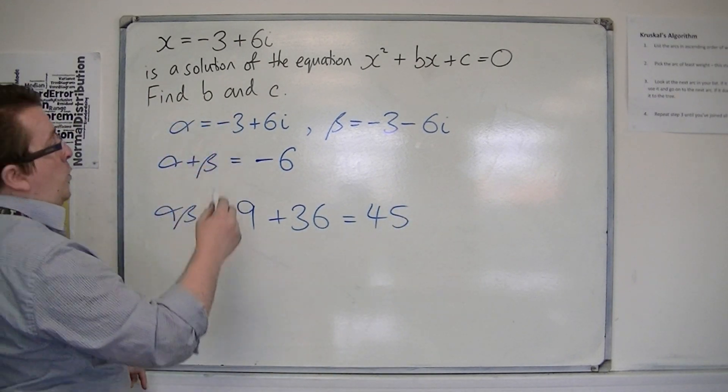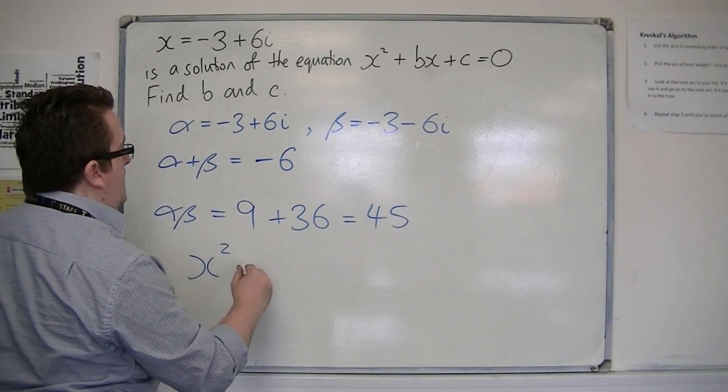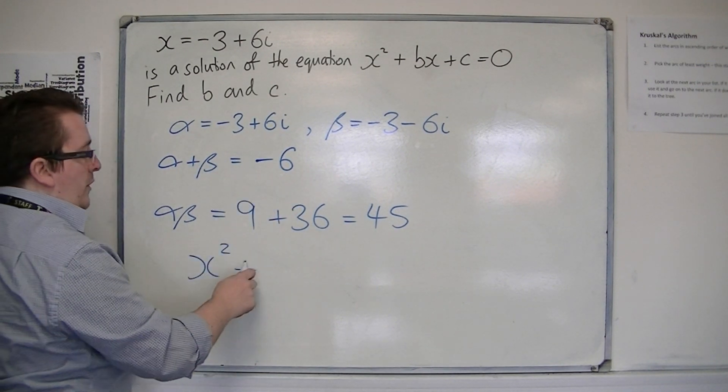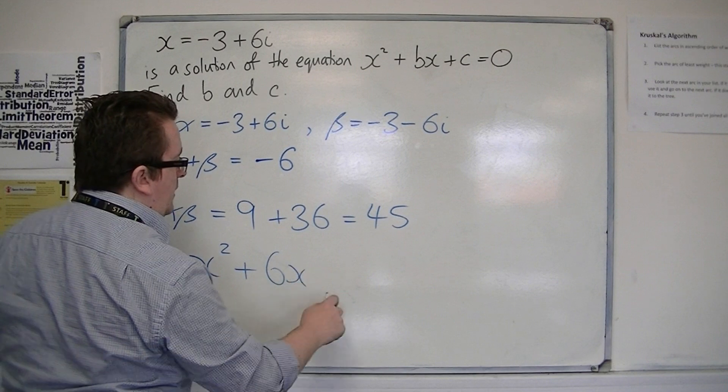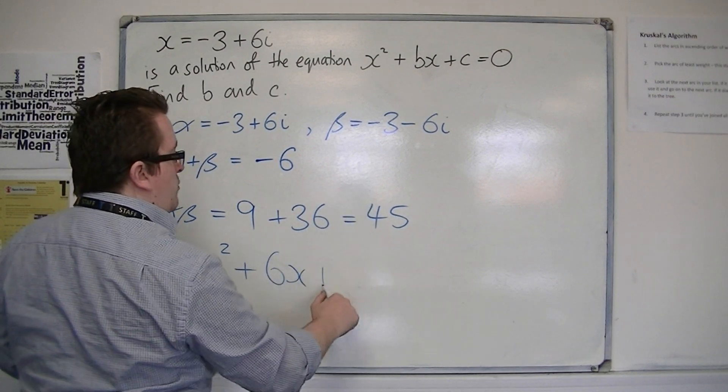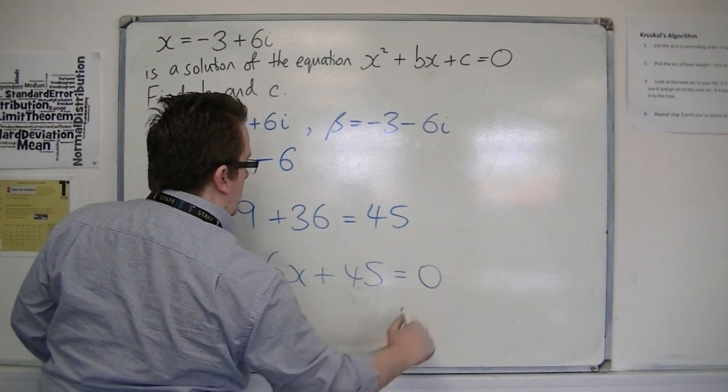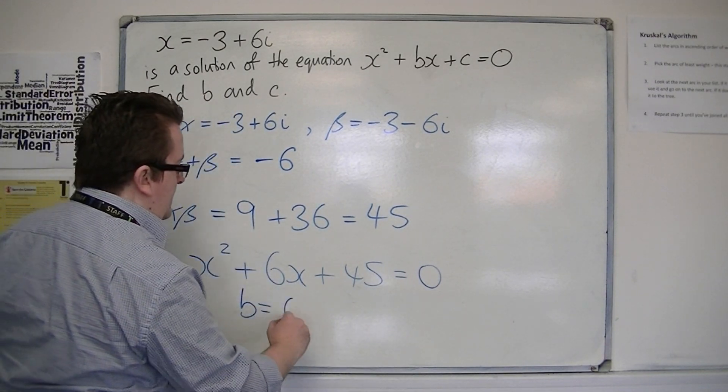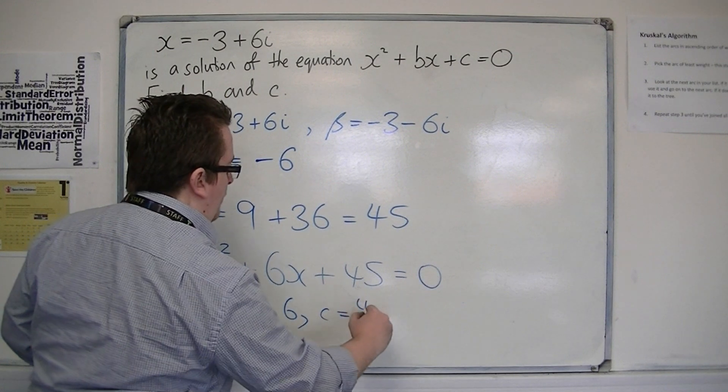The equation is x squared minus the sum of the roots, so plus 6x, plus the product of the roots. That is the equation I was looking for, so b is 6 and c is 45.